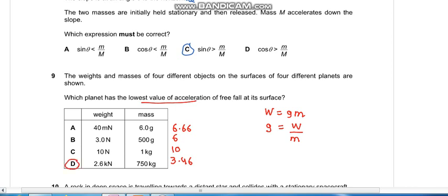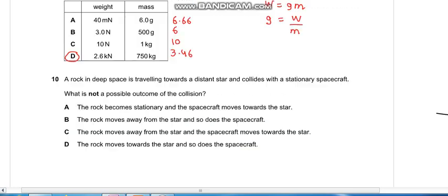Question number ten: A deep space rock is traveling towards a distant star and collides with a stationary spacecraft. Which is not a possible outcome of the collision? The rock becomes stationary and the spacecraft moves towards the star—this is possible, so it cannot be the answer. The rock moves away from the star and so does the spacecraft—this is not possible, applying initial momentum.